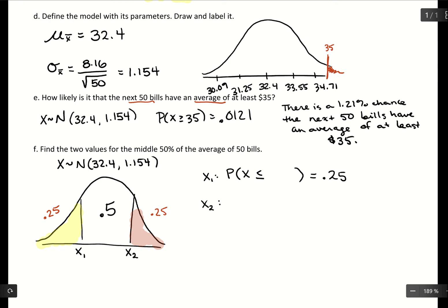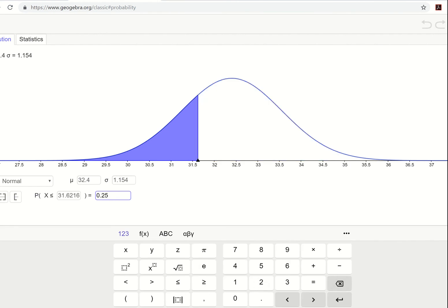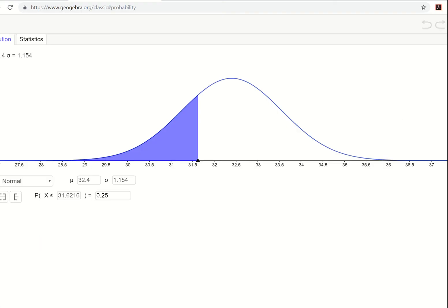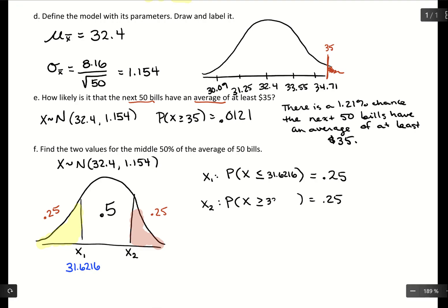For x2, I'm going to do the same thing, but now look above that value and have that area above be 0.25. Let's go to GeoGebra. We'll go to the left-hand side and change that area to 0.25, which gives us about 31.6216. That tells me what value is landing right here. Then for the upper value, I'll go to the right-hand side and change that area to 0.25, which will give us 33.1784.